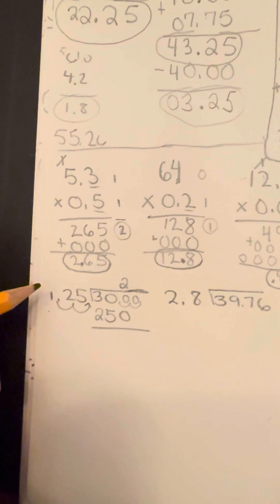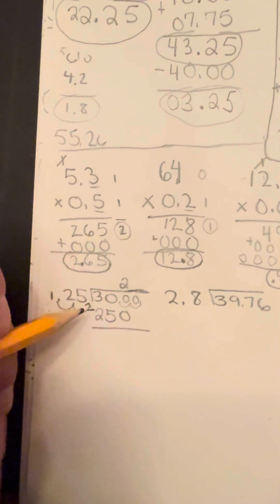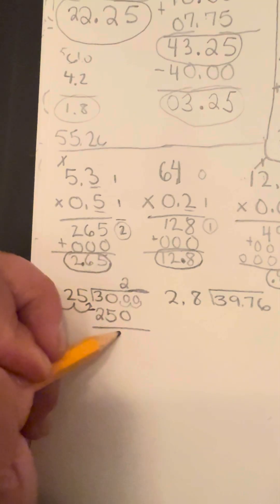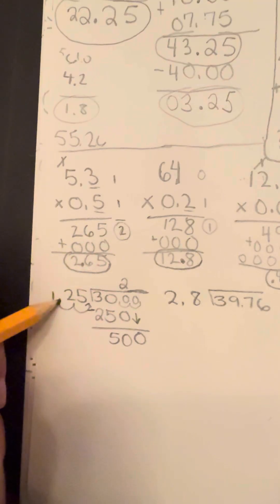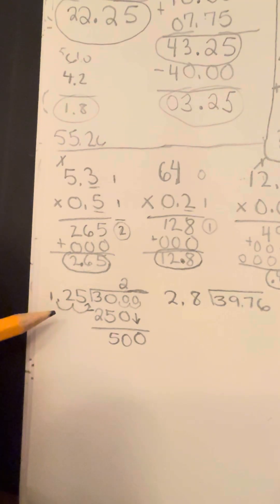So if you subtract 250 from 300, you're left with 50. And then we're going to bring this zero down that's left. And you're going to see how many times can 125 go into 500.